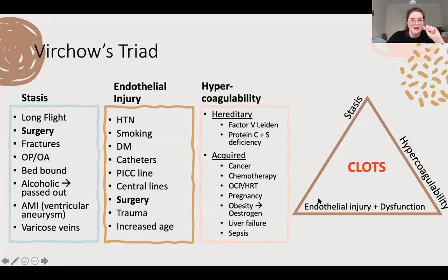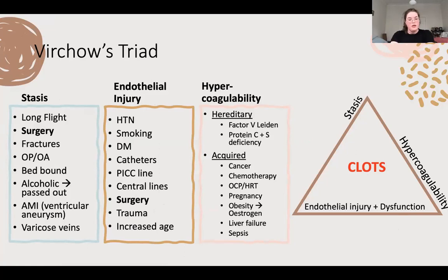Virchow's triad: stasis, endothelial injury, and hypercoagulability - comes up in PATH as well. Pretty easy to ask about: surgeries, fractures. Surgery comes up in endothelial injury because you're cutting things. Even a peripheral catheter or cannula can cause damage and be the source. Hypercoagulability is really important to ask about.